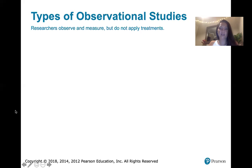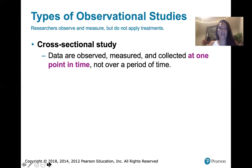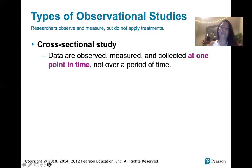We've got three types of observational studies and they're all related to when that data is collected. The first type is called a cross-sectional study. In a cross-sectional study, data are observed, measured, and collected at one point in time, not over a period of time. Most surveys are cross-sectional studies because you give the survey once and everybody gets it at the same time.